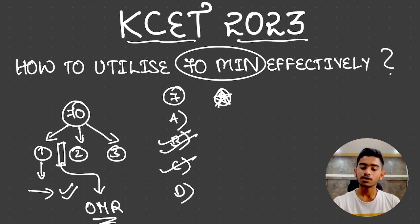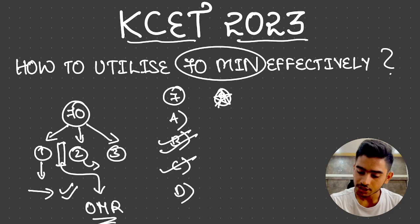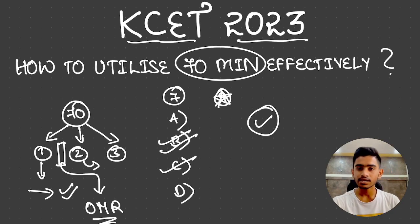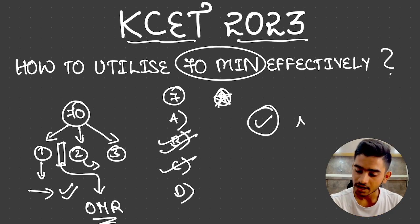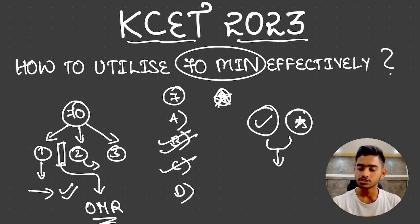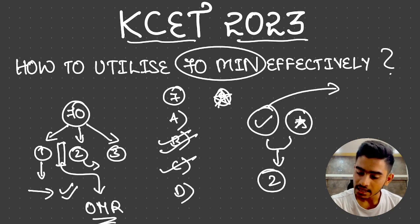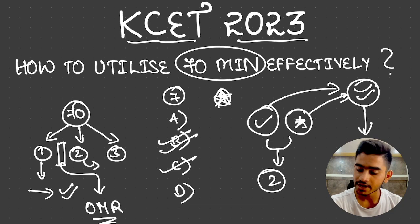Now comes Slot 2. In Slot 2, deal with the questions you gave a single tick and the questions you gave a star mark, because these are questions you have some idea about and can be tackled now. Once you complete Slot 2, I'm pretty sure many of those single ticks and star marks will be converted into double ticks, and that is where you fill them into your OMR.